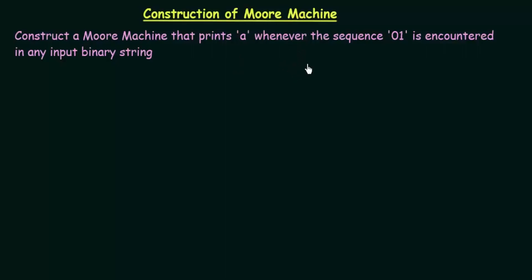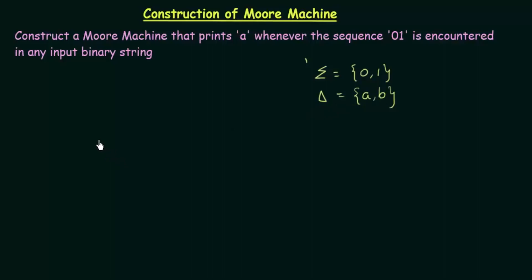For this example, our input sigma could be zeros and ones, and our output delta will be A's or B's. We will design the Moore machine by first designing the DFA for this and then converting it to a Moore machine. We should design a DFA that will accept all binary strings that end with 01.